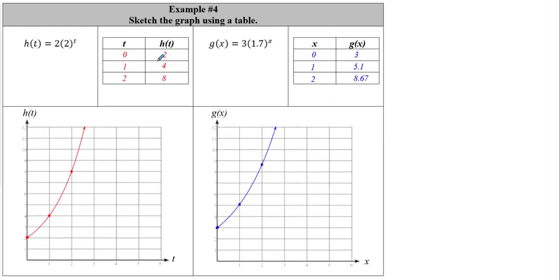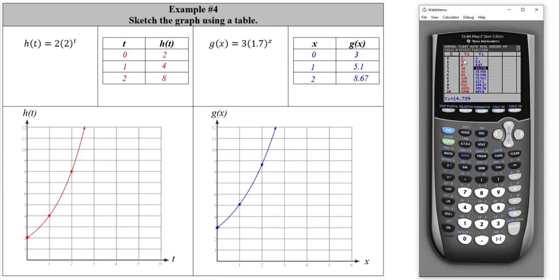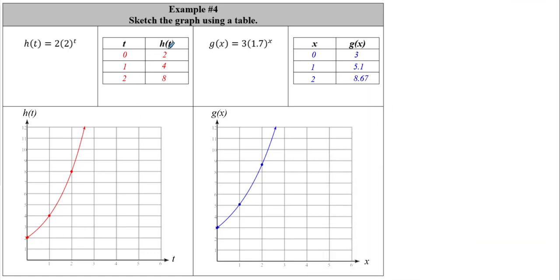After filling in the tables and graphing, we see the initial values — a equals 2 for h of t, starting at 2, and a equals 3 for g of x, starting at 3. The slightly higher growth rate of g of x gives it a steeper curve, which is why the shapes look a little different.